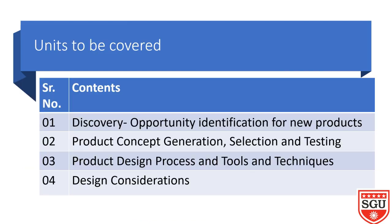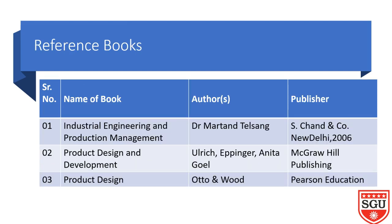This course will cover four units. In the first unit we will discuss how to discover opportunities and identify requirements. Unit two will focus on product concept generation and selection. Unit three will cover actual design process tools and techniques. Unit four covers aesthetics and ergonomic considerations.